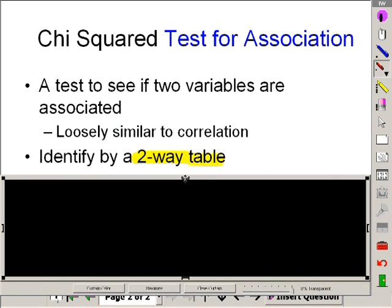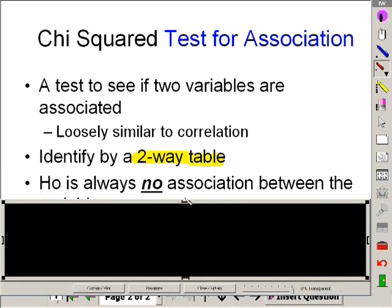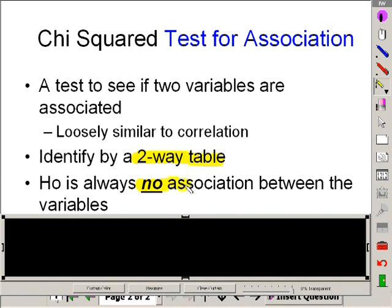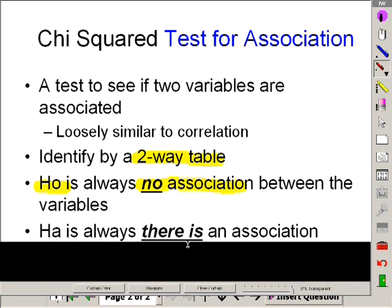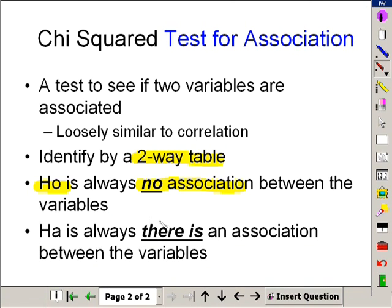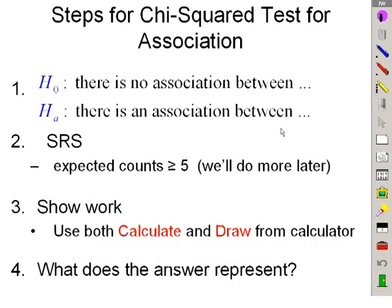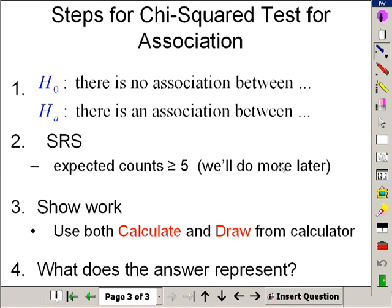Our Ho and Ha are going to be different. In the previous one we did before, the goodness to fit, we said Ho was our sample is correctly distributed. For Ho, it rhymes with no. Ho is always no association. Ho, no association. Ha obviously is the opposite. There is an association. Ho, no. And then Ha, there is. So that's, this one here is extremely important.